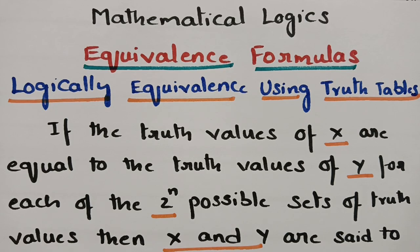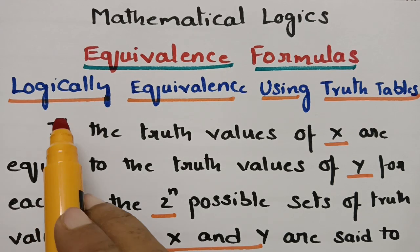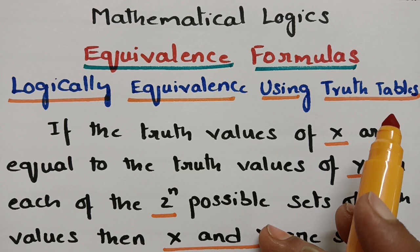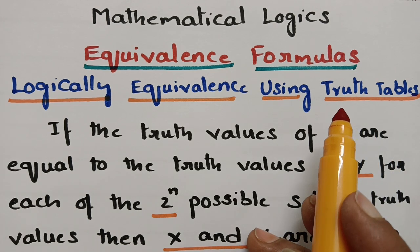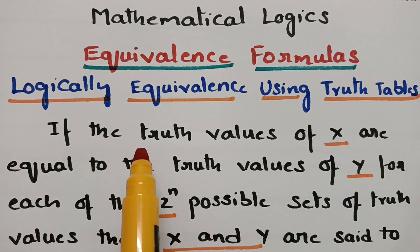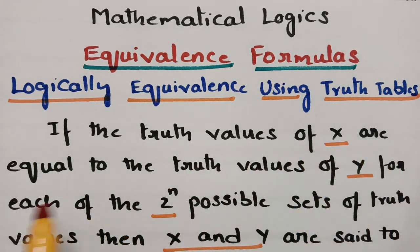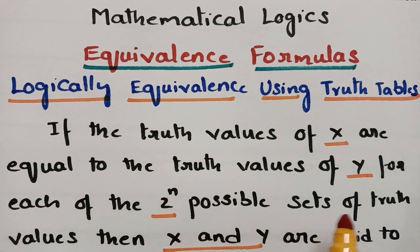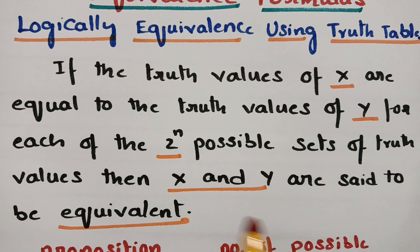Today's video is on equivalence formulas, otherwise known as logical equivalence using truth tables. This topic is from mathematical logic and is related to MFCS or DMJT. According to the definition of logical equivalence: if x and y are given, and the truth tables of x are equal to the truth tables of y for each of the 2^n possible sets of truth values, then x and y are said to be equivalent.